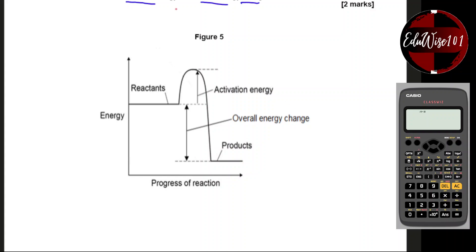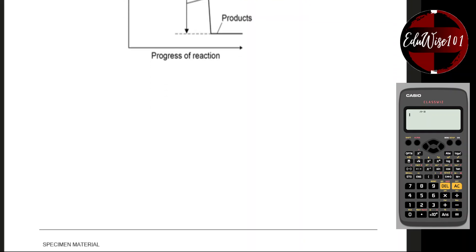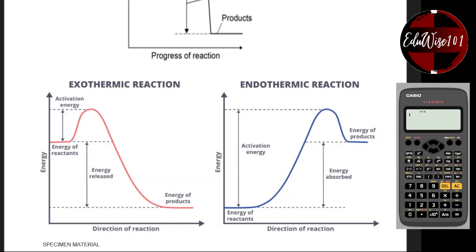Since we are on the subject of exothermic and endothermic reactions and energy changes, it's worthwhile to revise the energy profile diagrams for both and compare them. Here's a diagram to compare the energy change for an exothermic reaction and an endothermic reaction. In an endothermic reaction, the energy of the reactants is much lower than the products. A good example is photosynthesis — carbon dioxide plus water absorbs sunlight energy to produce glucose plus oxygen, which has much higher energy.